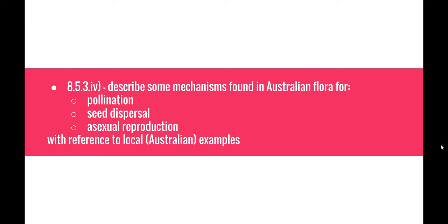Welcome to the next video in the evolution series. This video will be looking at evolution of the Australian biology syllabus dot point 8.5.3, describing some mechanisms found in Australian flora for pollination, seed dispersal, and asexual reproduction, all with reference to local Australian examples. We'll also be looking at the investigation that ties in with how Australian flora undergoes different forms of pollination.